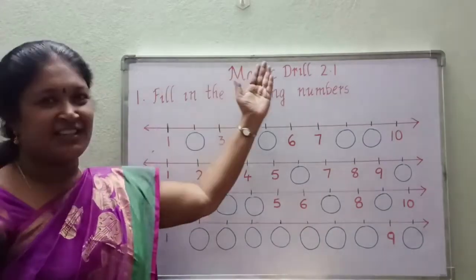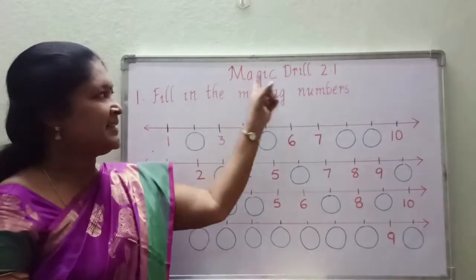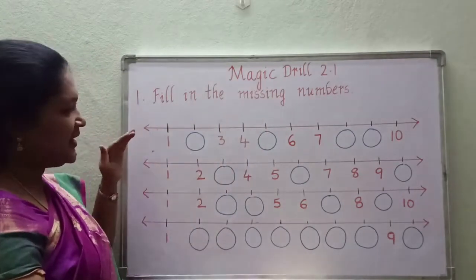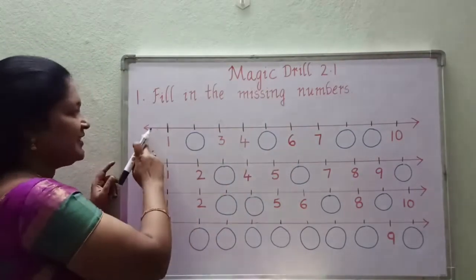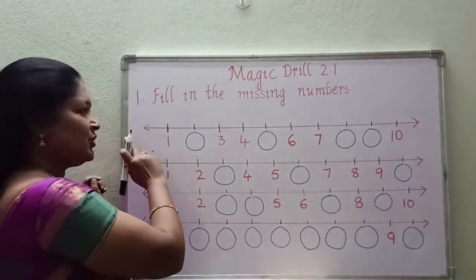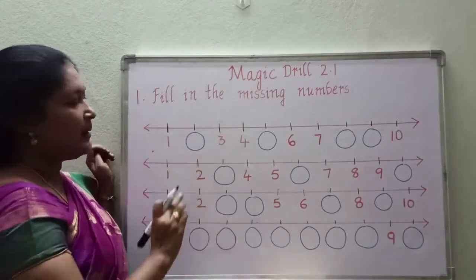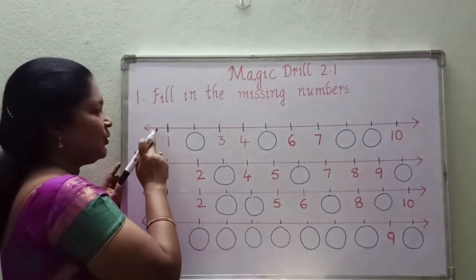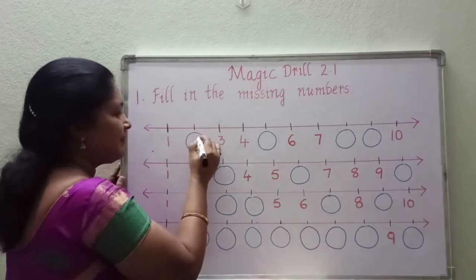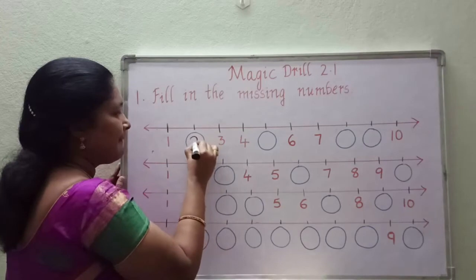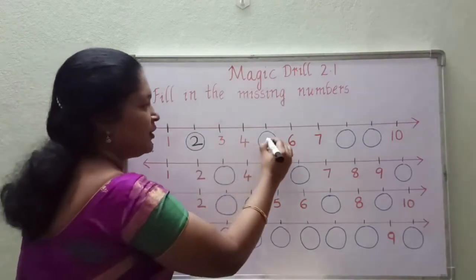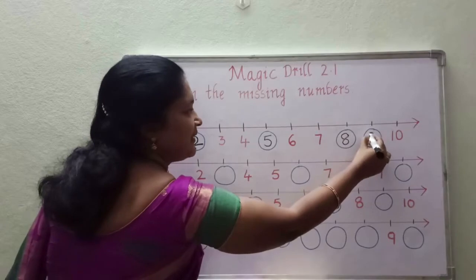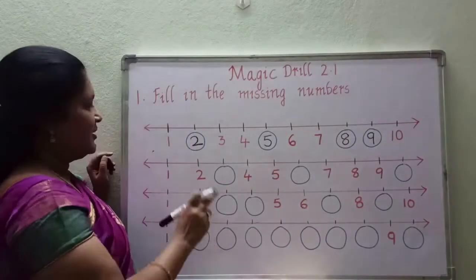Let us start Magic Drill 2.1 exercise. What is the first bit? Fill in the missing numbers. Here they gave some number lines. All these horizontal lines are number lines, and on them some numbers are there but some numbers are missing. You have to fill in those numbers. 1, 2, 3, 4, 5, 6, 7, 8, 9, 10. So one row is completed.